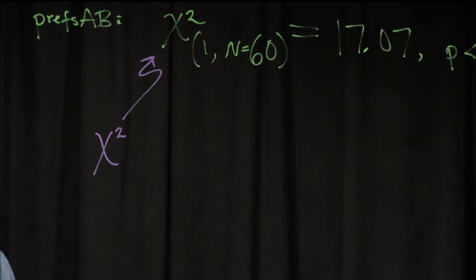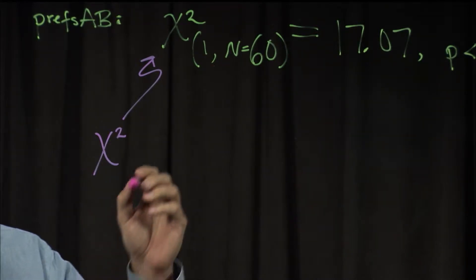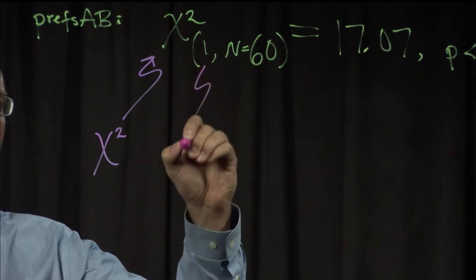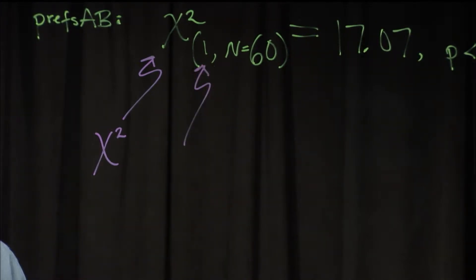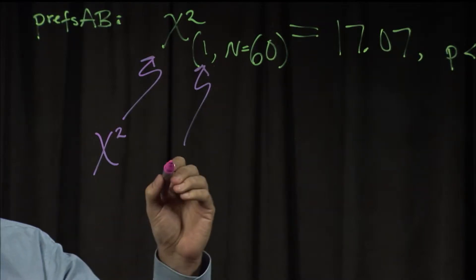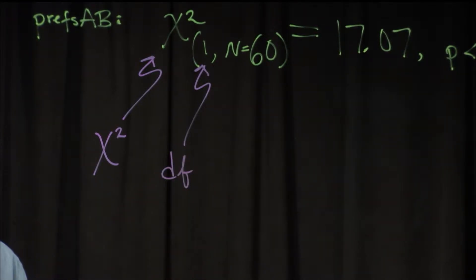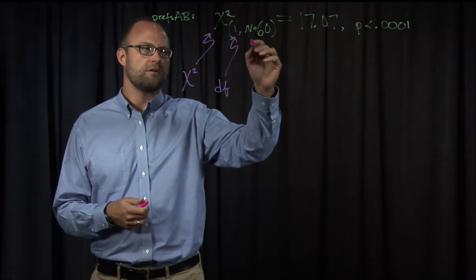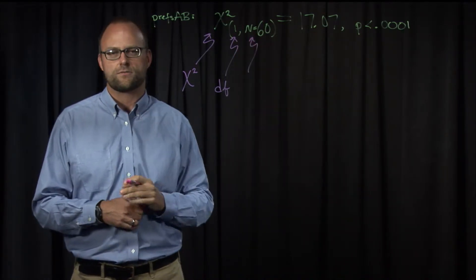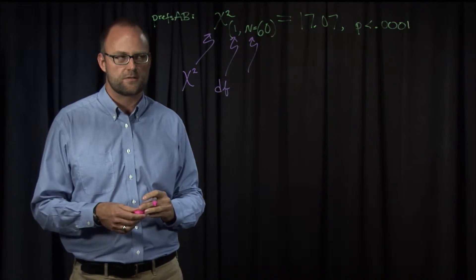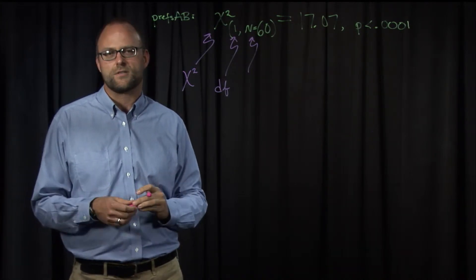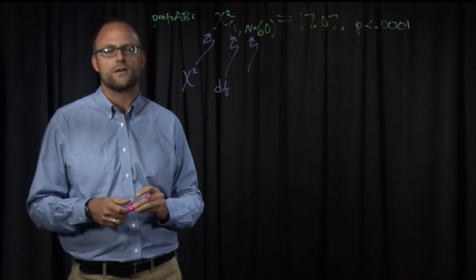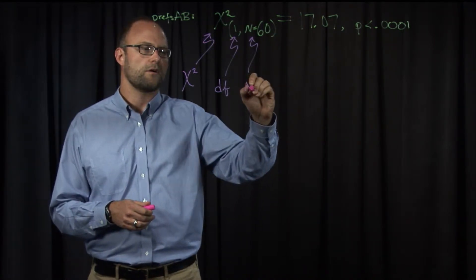The squared symbol is there by convention. This first item, and you can make these subscripts in parentheses or you can make them full size, it's really kind of up to you. People do both. But this is the degrees of freedom, and the chi-squared distribution and therefore test only has one degree of freedom, so that's what's there. But along with that, after a comma, you'd report the number of cases or the number of measures or data points. We had 60 respondents, 60 subjects here, and they gave us a preference, so n equals 60, and that's where we'd put our n.